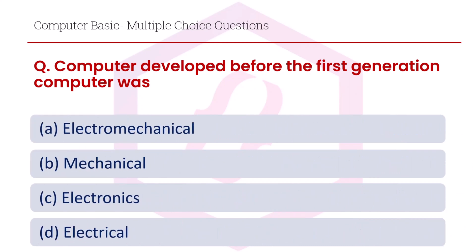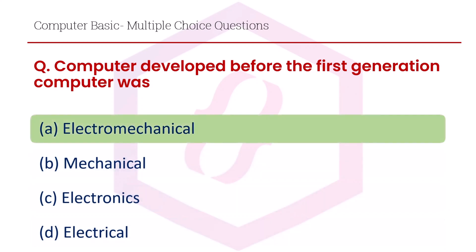The next question is: computer tablet before the first generation computer was option A electromechanical, option B mechanical, option C electronics, option D electrical. The right answer is option A, electromechanical.